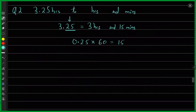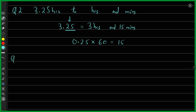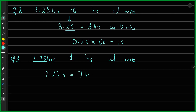Let's do one more example and then I'll ask you to do it. Question 3: 7.75 hours, again converted to hours and minutes. Out of 7.75, I can write down 7 hours directly. And for this 0.75, I just do 0.75 multiplied by 60, and the answer is 45 minutes. So it would be 7 hours and 45 minutes.